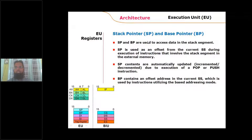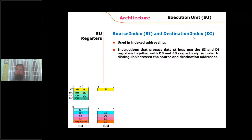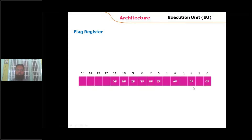Using the stack pointer, you can access values pushed serially one by one. Using the base pointer, you can access any required value from the stack. SI (Source Index) holds the offset address of the data segment, and DI (Destination Index) holds the offset address of the extra segment — though DI can also be used with the data segment.